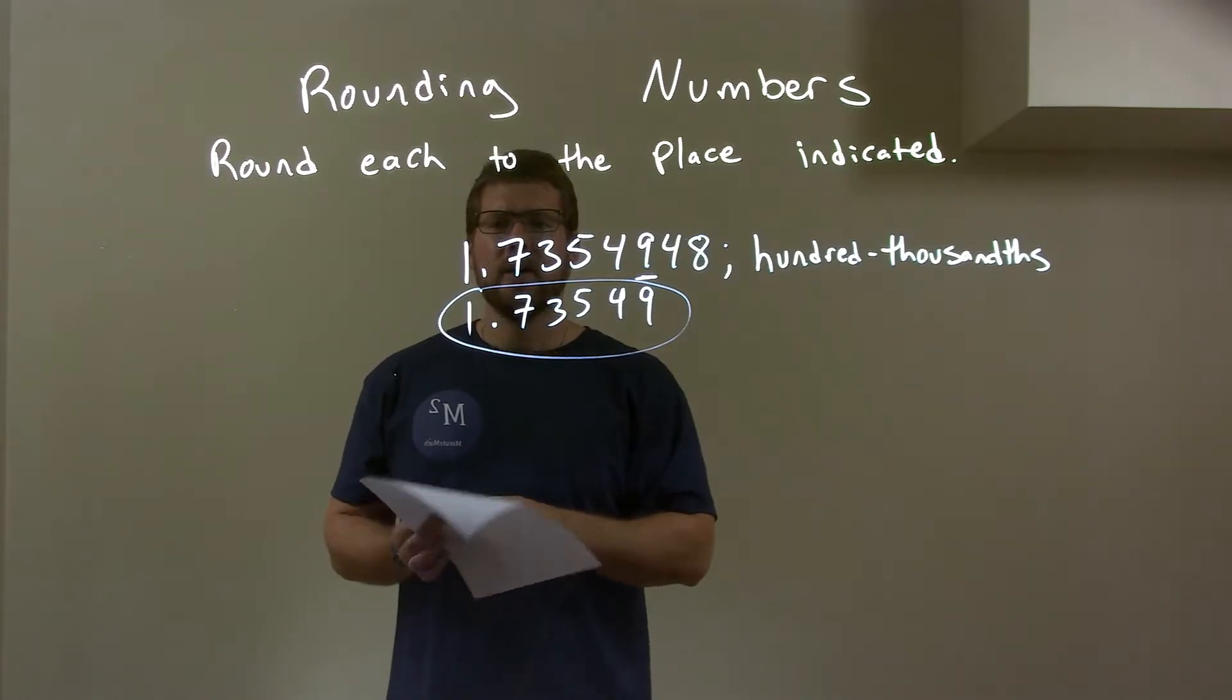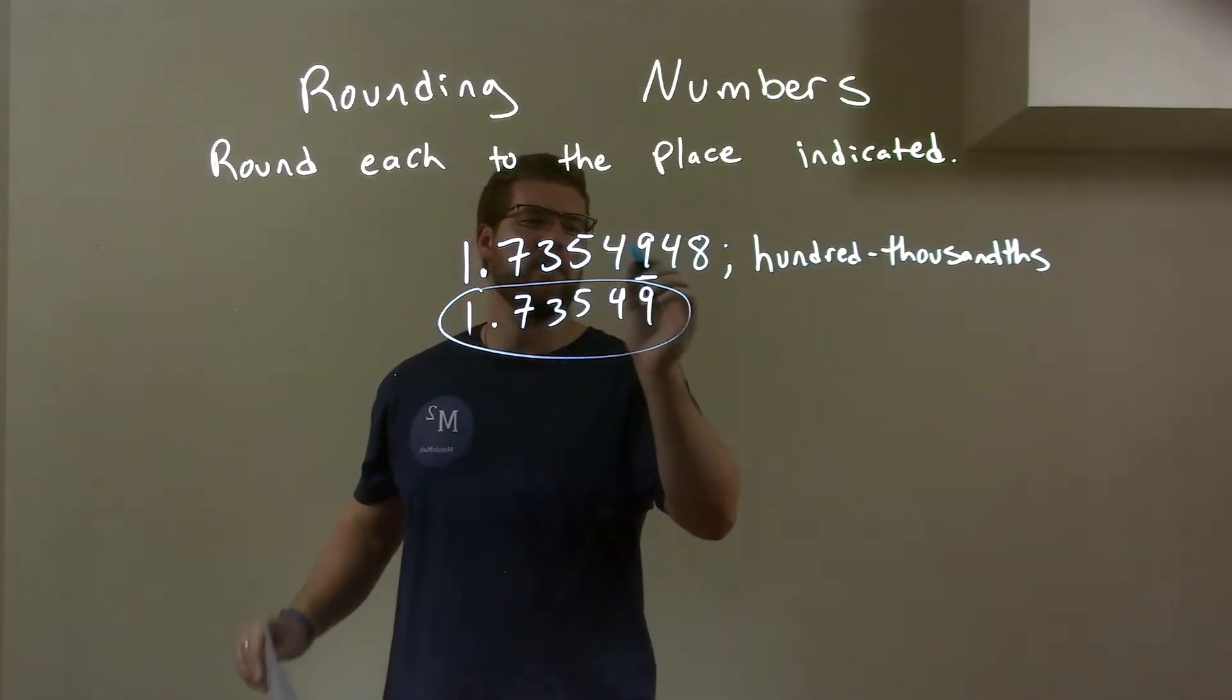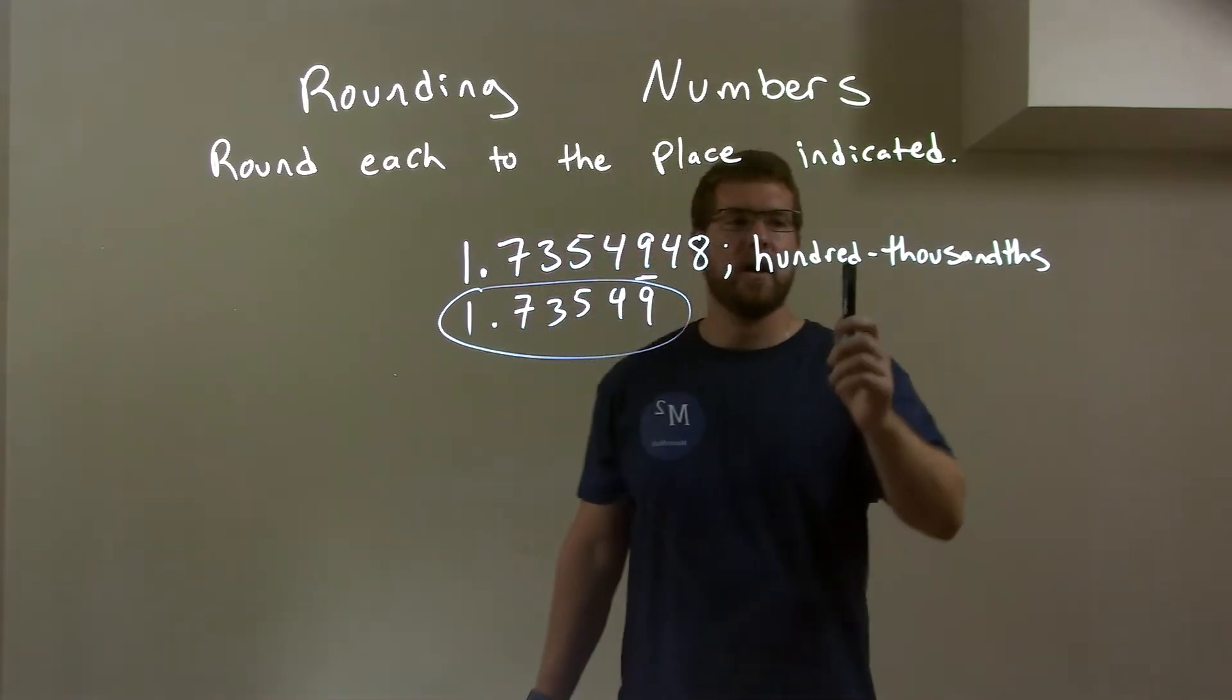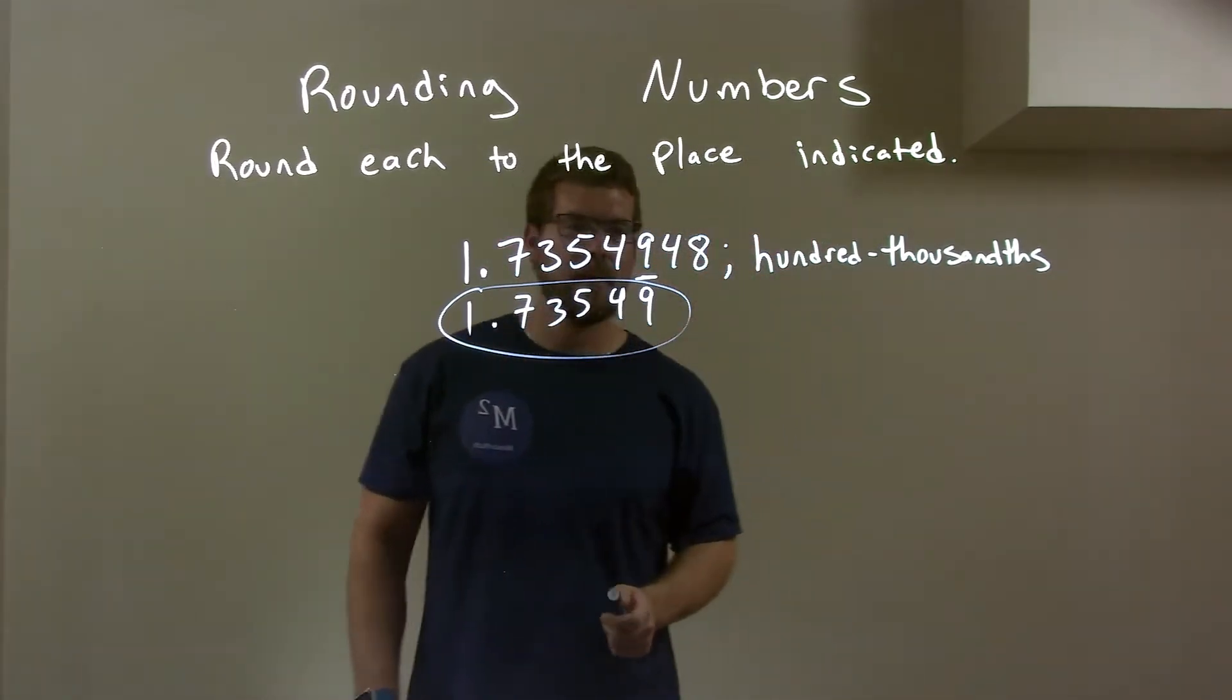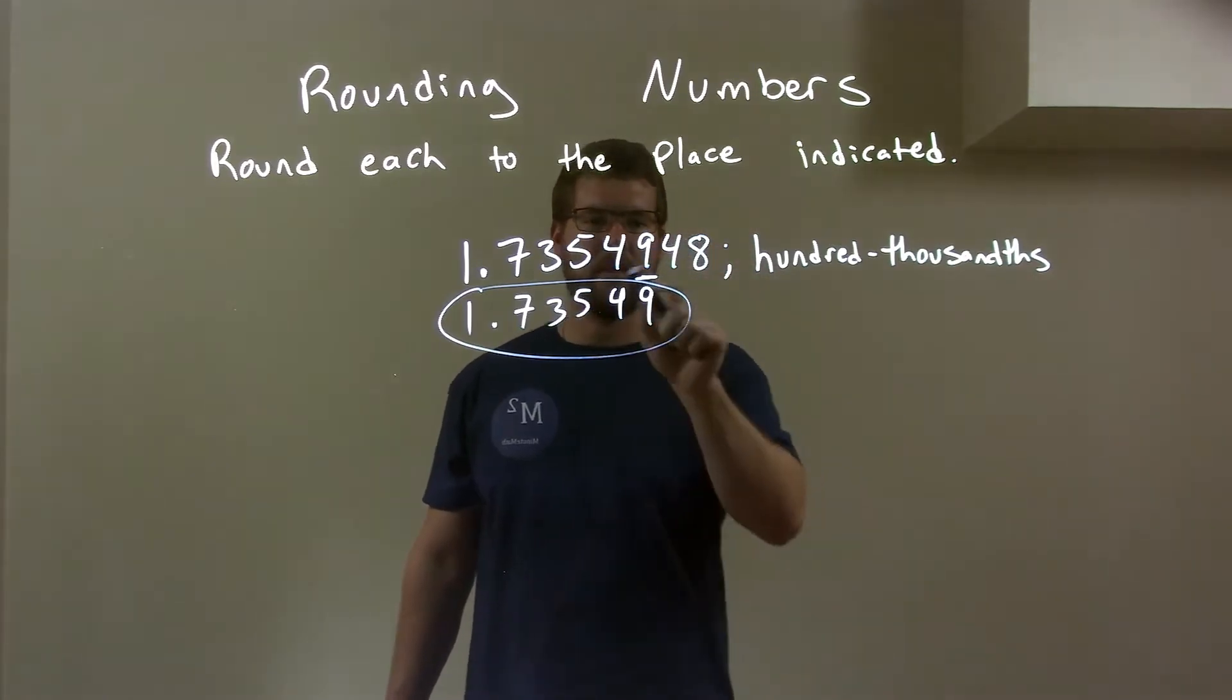So quick recap. We're given 1.7354948. And we're rounding to the hundred thousandths. Hundred thousandths is indicated by this 9 right here. I put the mark there.